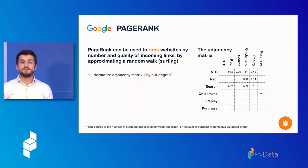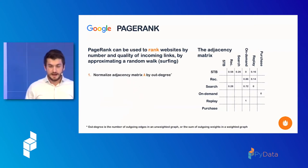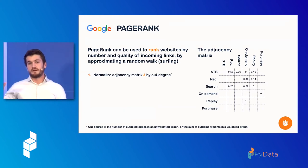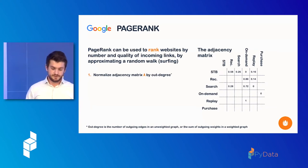So, how do we calculate this numerically? So, as you see on the right, I've normalized this adjacency matrix, and I've done that by out-degree. So, out-degree is the sum of outgoing edge weights, or if you have an unweighted graph, it's just the sum of outgoing edges. So, you can see that the rows basically add up to one. So, it's effectively acting as a transition probability. So, how likely am I to go from the STB to the next given service?